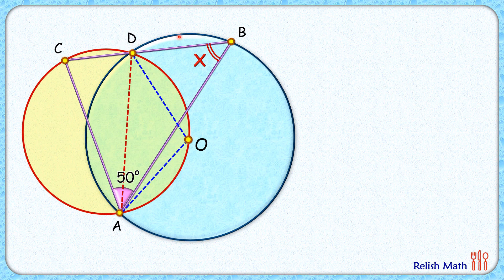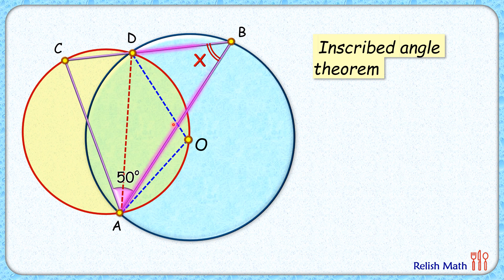Focusing on the blue circle, apply the inscribed angle theorem. Chord DA sustains an angle of x degrees at the circumference, and by the theorem it will sustain twice this angle at the center. So this angle will be 2x.